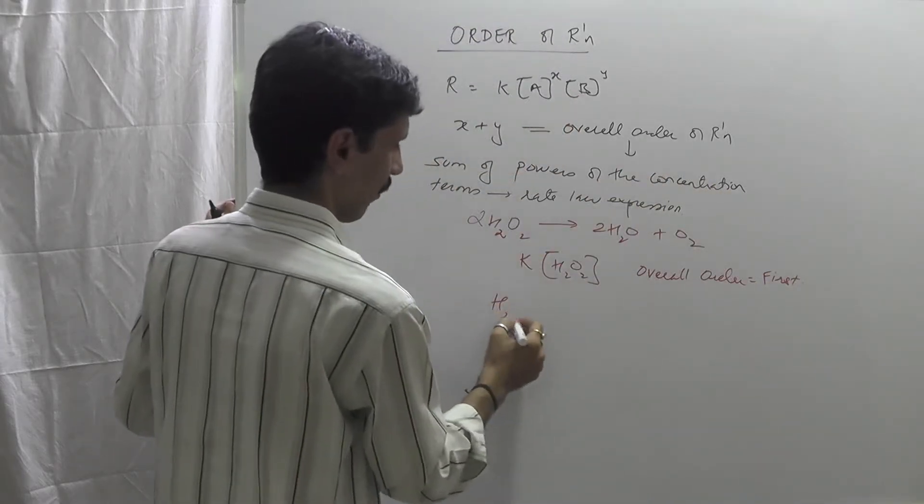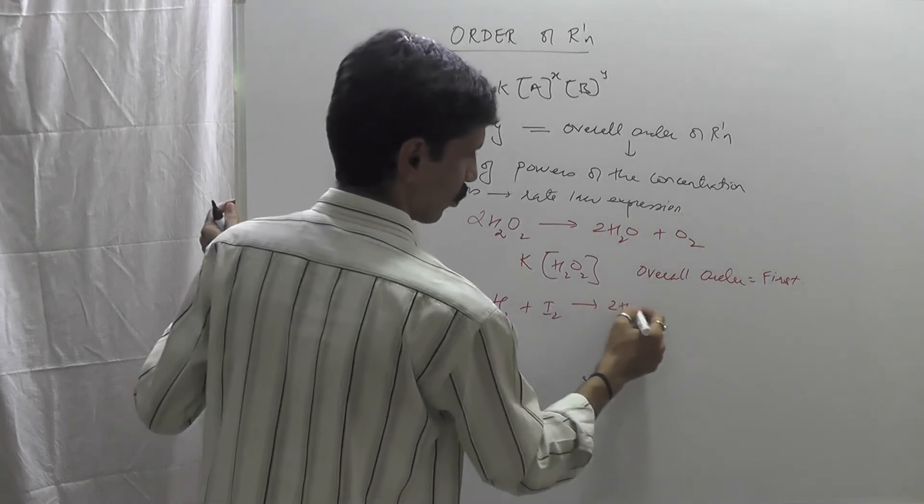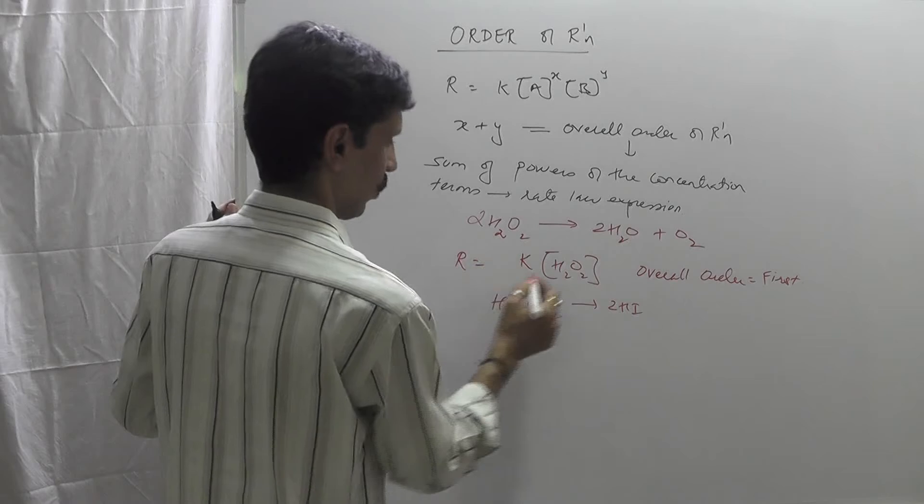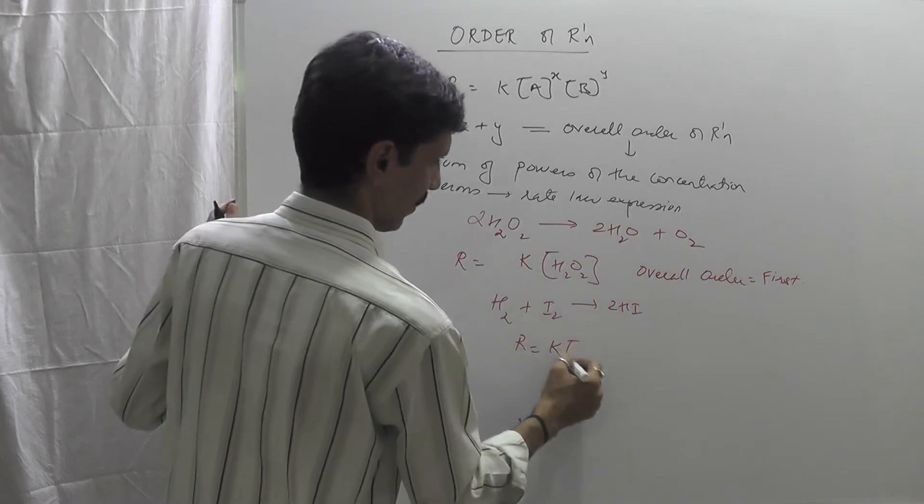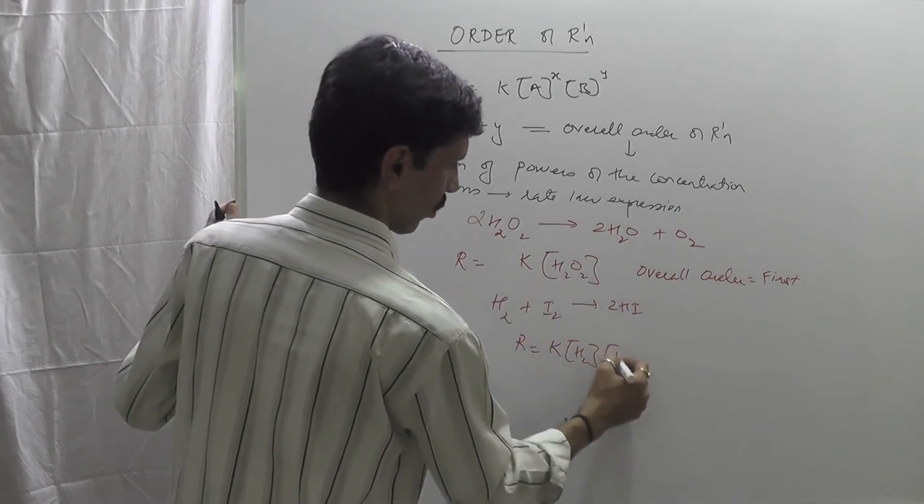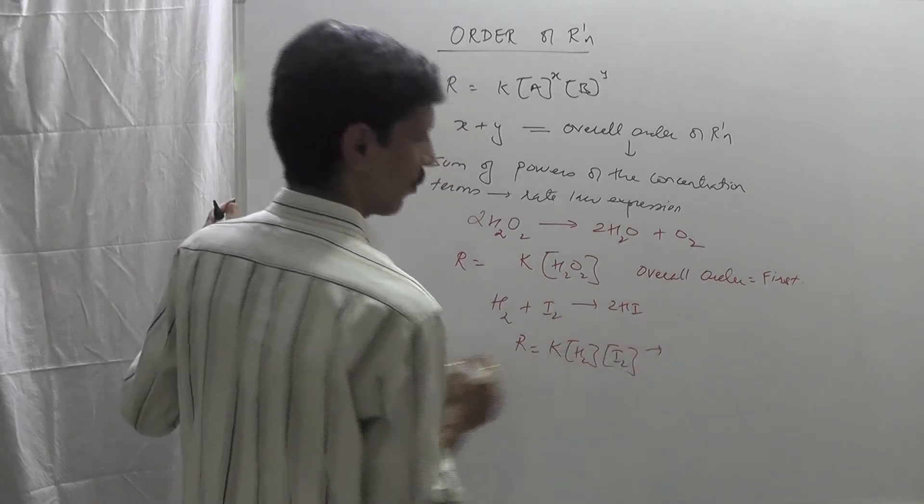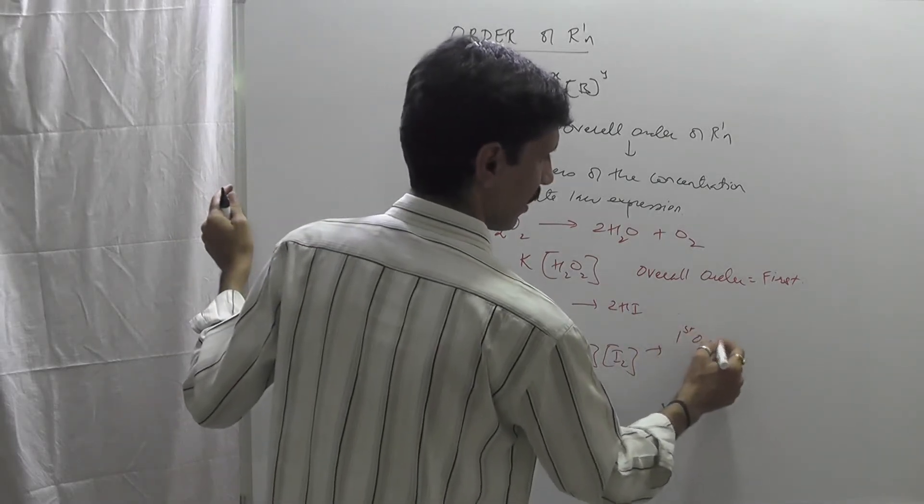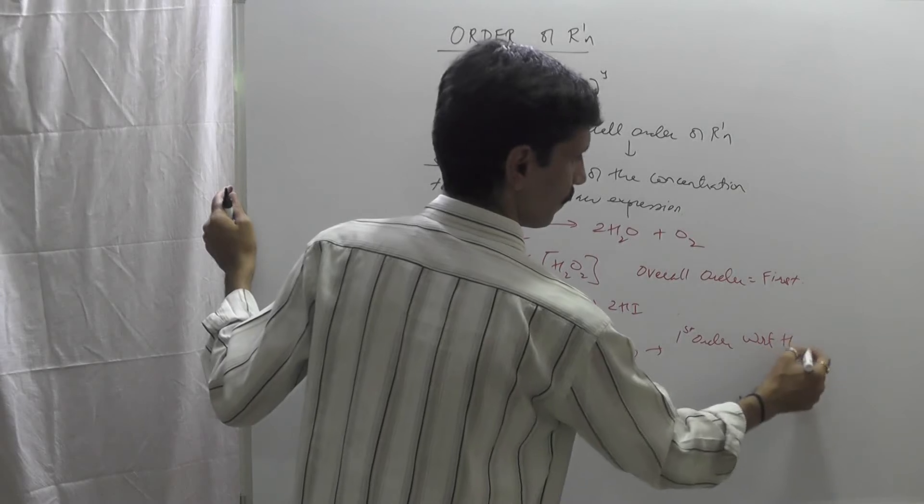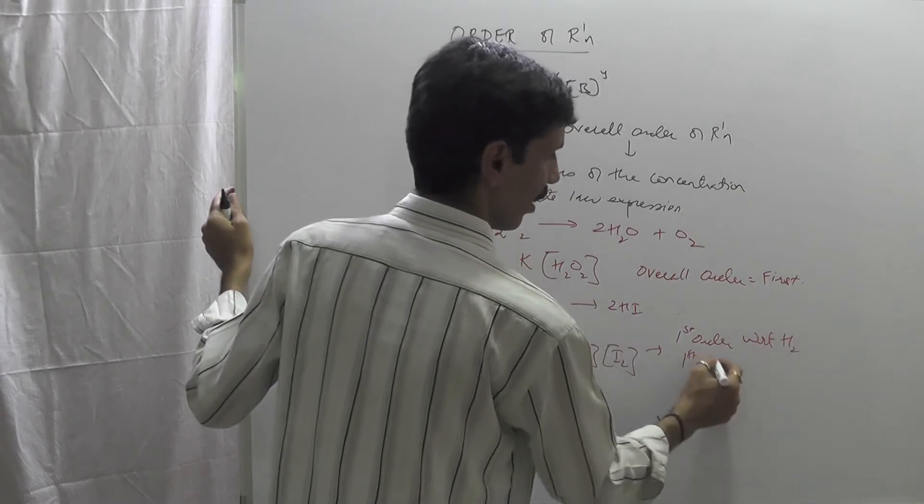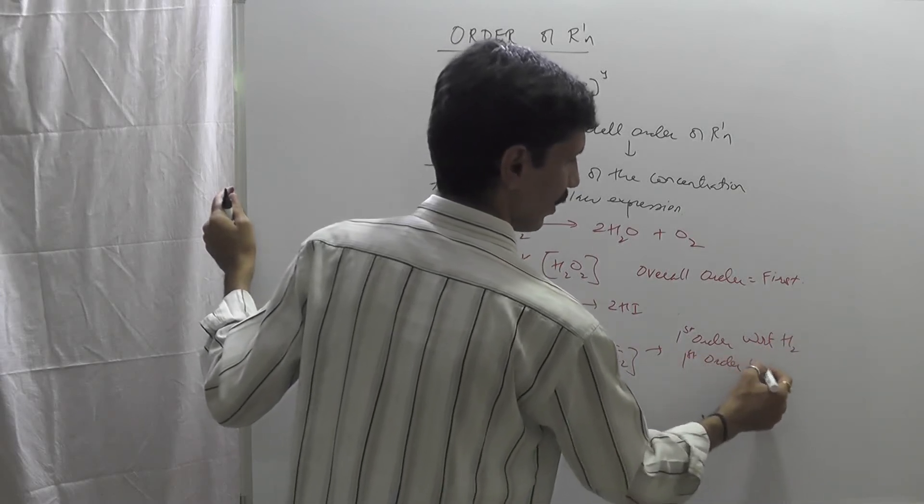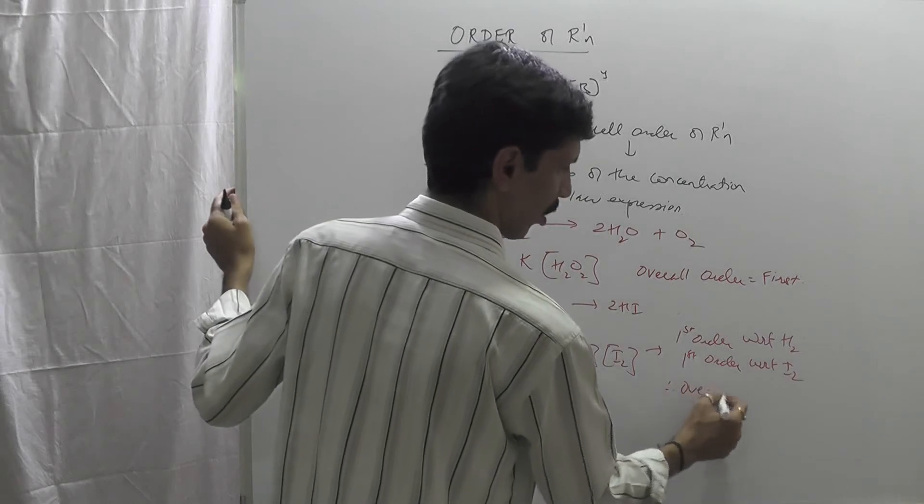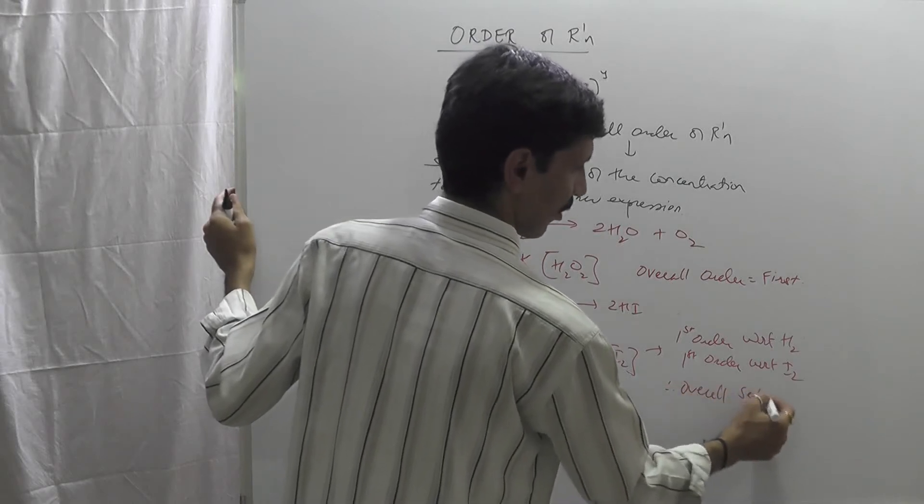Similarly, if I write H2 plus I2 and it gives me 2HI, the rate law expression here is R is equal to K into concentration of H2 into concentration of I2. So I am going to write it is first order with respect to H2, first order with respect to I2, and therefore overall, it is a second order reaction.